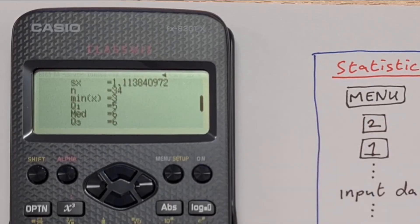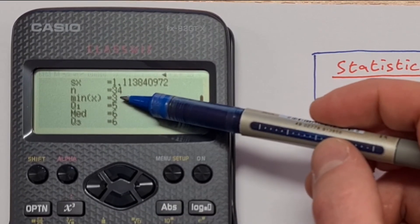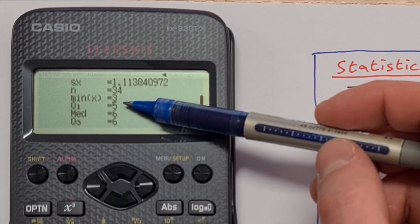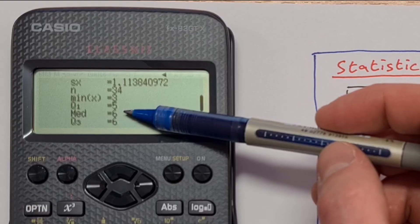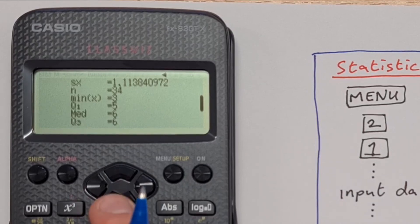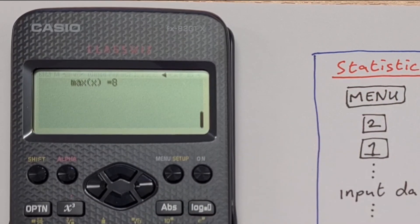N is the total number of data points, 34. The minimum was 3. We have Q1, which is the lower quartile, that's 5. We have the median, which is 6. And we have Q3, the upper quartile, which in this case is 6. And then we have down again, we have our max, which is 8.